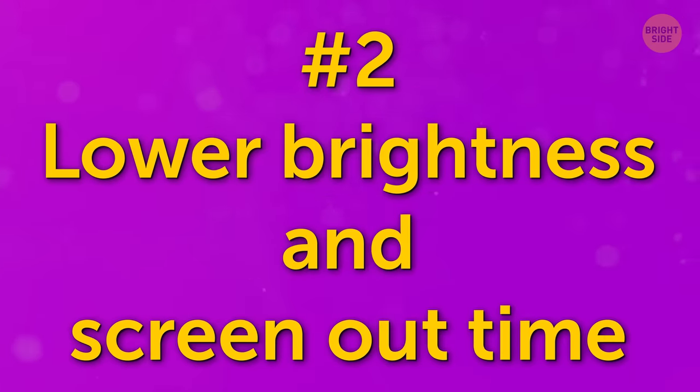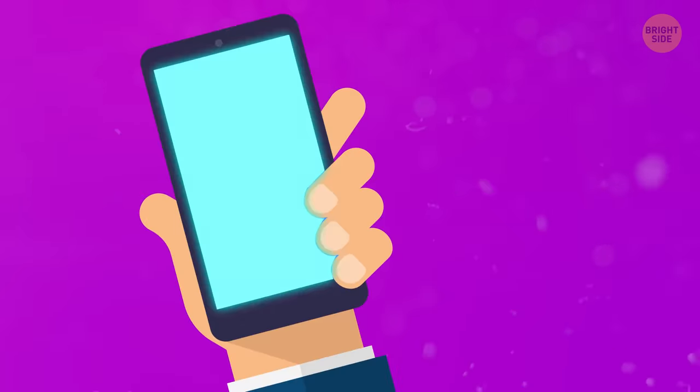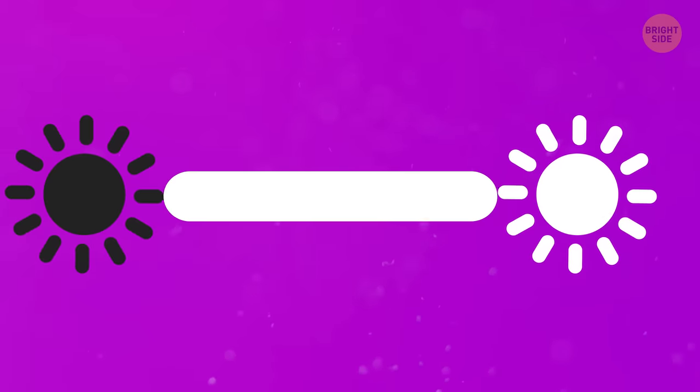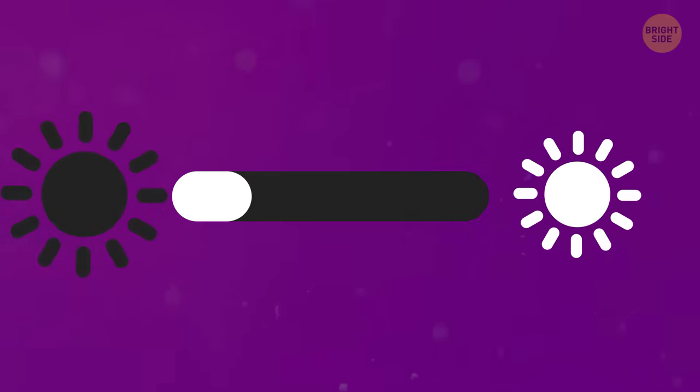Number 2. Lower brightness and screen timeout. Your phone's screen spends more juice than any other part. Lowering your phone's brightness can go a long way toward extending its charge.